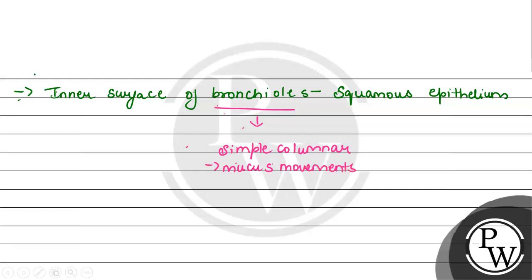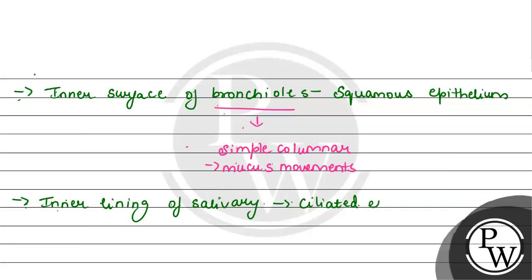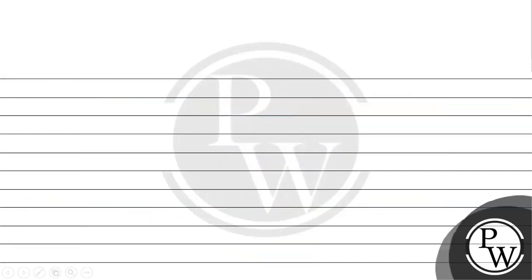Option B is the inner lining of salivary ducts, paired with ciliated epithelium. The inner lining of salivary ducts is actually lined with simple cuboidal or columnar cells. So the pairing given here is also wrong.